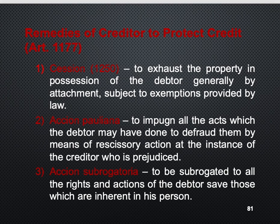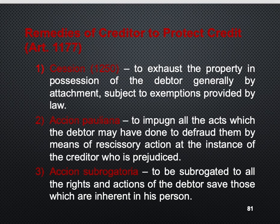The requisites of accion pauliana are: the plaintiff asking for rescission has a credit prior to the alienation although demandable later; the debtor has made a subsequent contract conveying a patrimonial benefit to a third person; the creditor has no other legal remedy to satisfy his claim but would also benefit by rescission of the conveyance to the third person; the act being impugned is fraudulent; and the third person who received the property conveyed, if by onerous title, has been an accomplice in fraud.